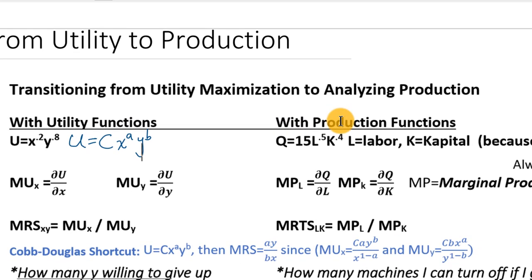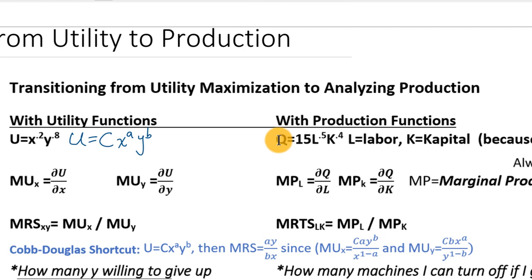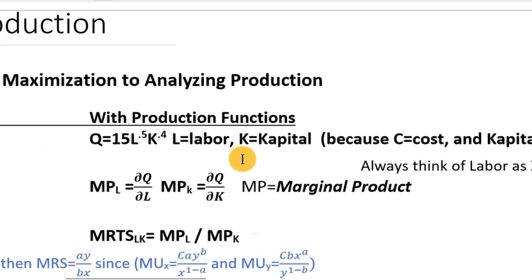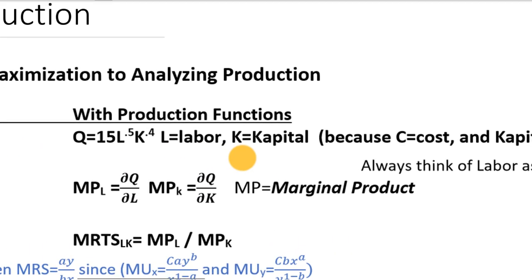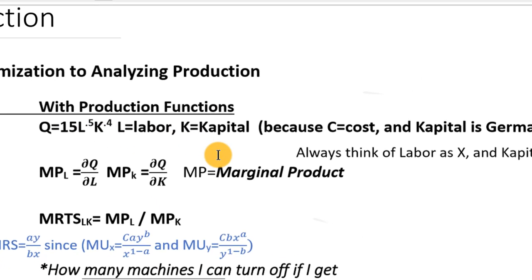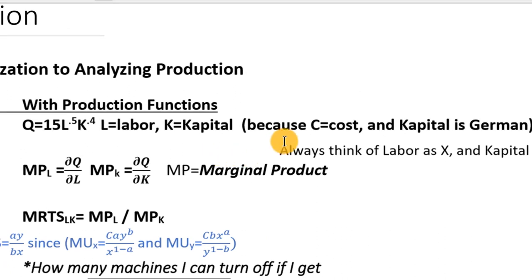When talking about production, instead of U for utility, we use Q, which represents how many units of output we get when we use certain amounts of inputs. Our two inputs are L for labor and K for capital. Capital is not spelled with a K in English, but we use K because C is usually reserved in economics for cost — TC for total cost, ATC for average total cost — and we don't want to confuse the two.